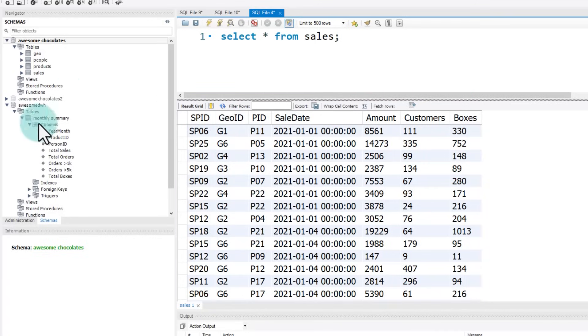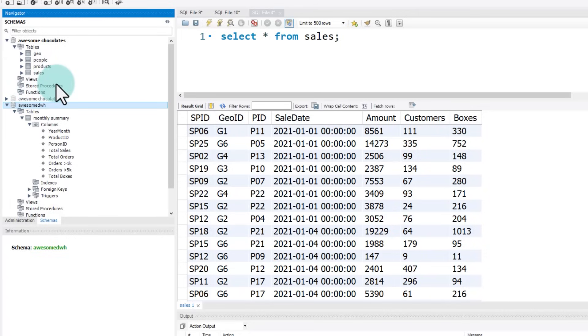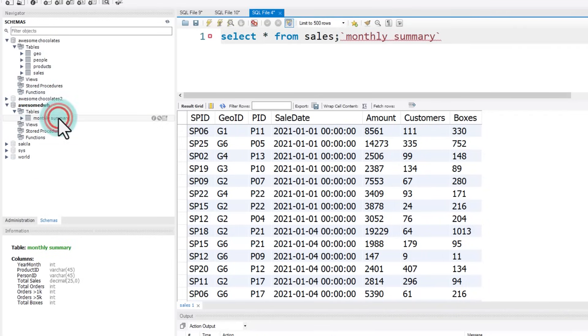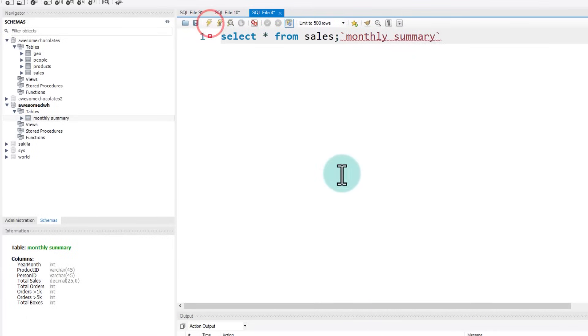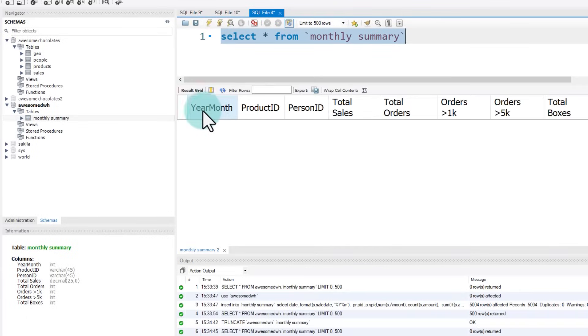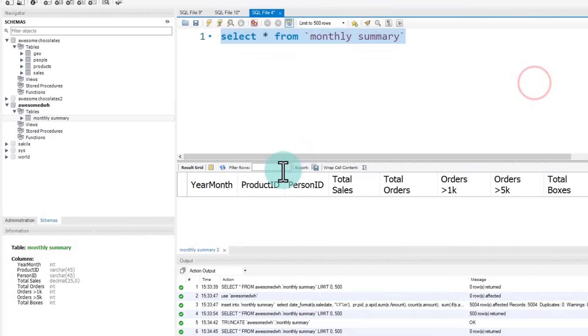Now from this, what we want to do is we would like to set up a data warehouse. I have conveniently put everything into the same MySQL, but in reality, this is actually sitting in a separate system. So in this data warehouse, I have got a simple table called monthly summary. Right now, there is nothing in this. If I select this and execute, you'll see that there is nothing in this table. But what we want here is year month, product ID, person ID. And for that combination, what is the total sales, total orders, total boxes, and two different types of order counts, orders that have more than $1,000 and more than $5,000. Now this is kind of like an aggregated table. It doesn't have the individual daily transactions.